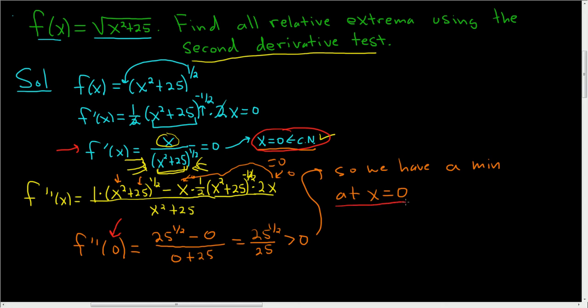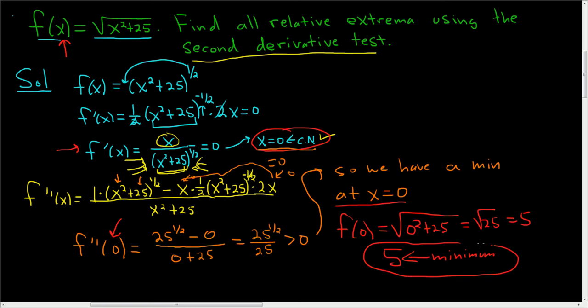To actually find the minimum, we take the zero and plug it back into the original function. So f of zero is the square root of zero squared plus 25. That's the square root of 25, which is equal to 5. So 5, that's the minimum. And that's it. That's how you use the second derivative test.